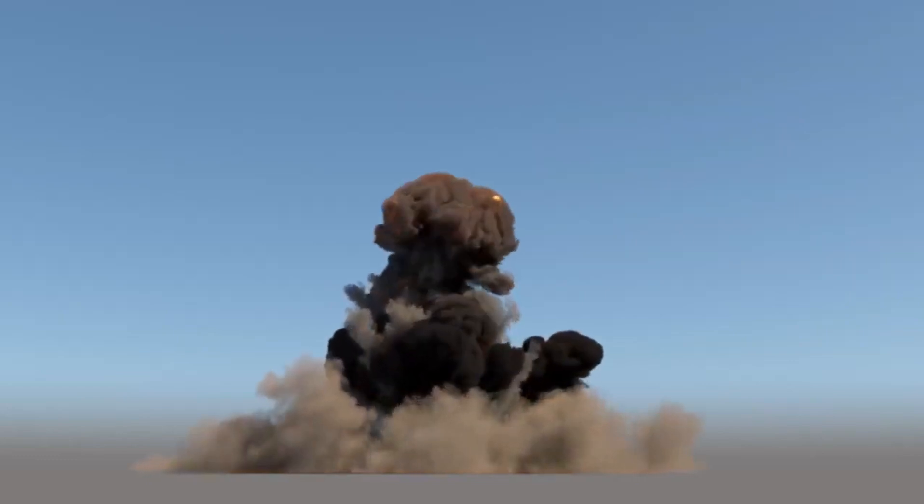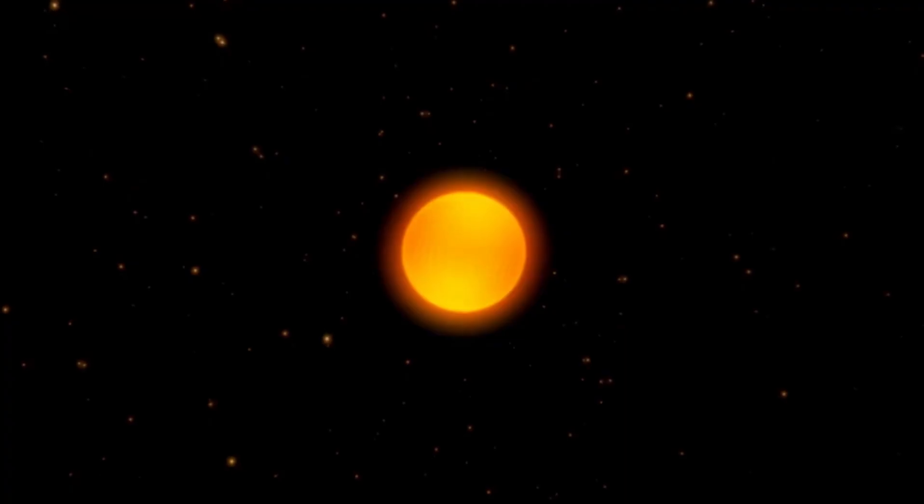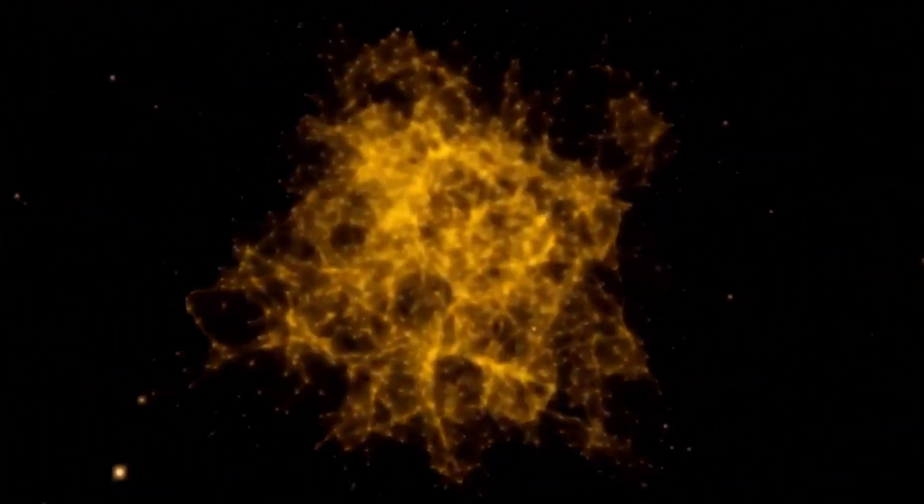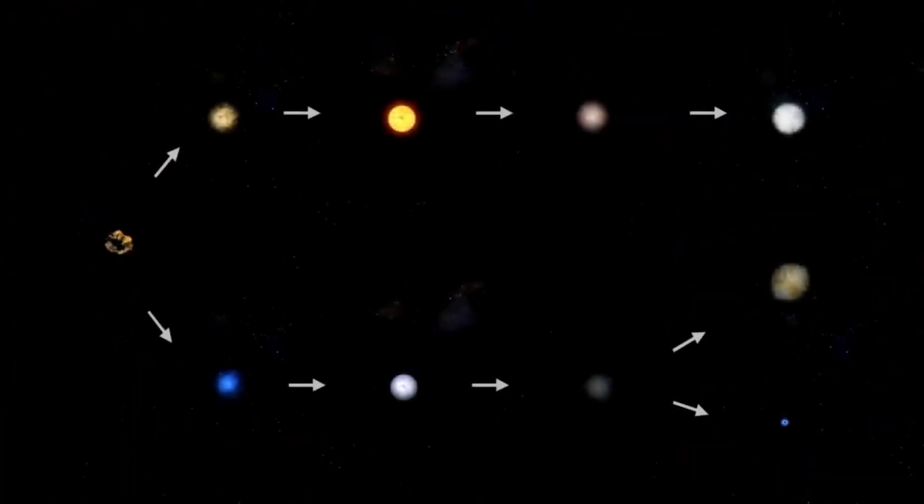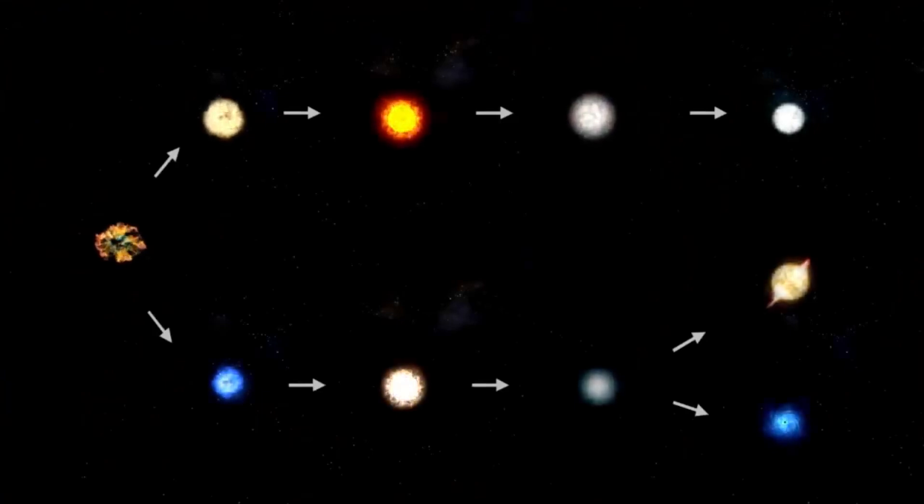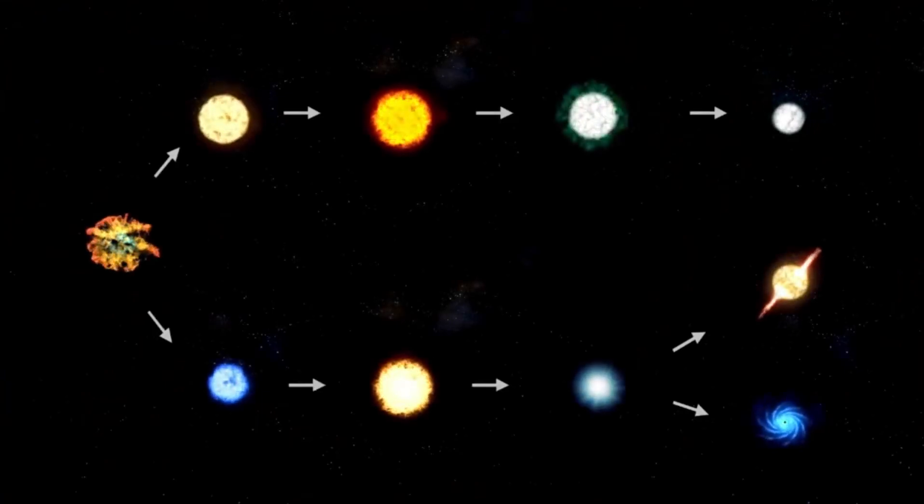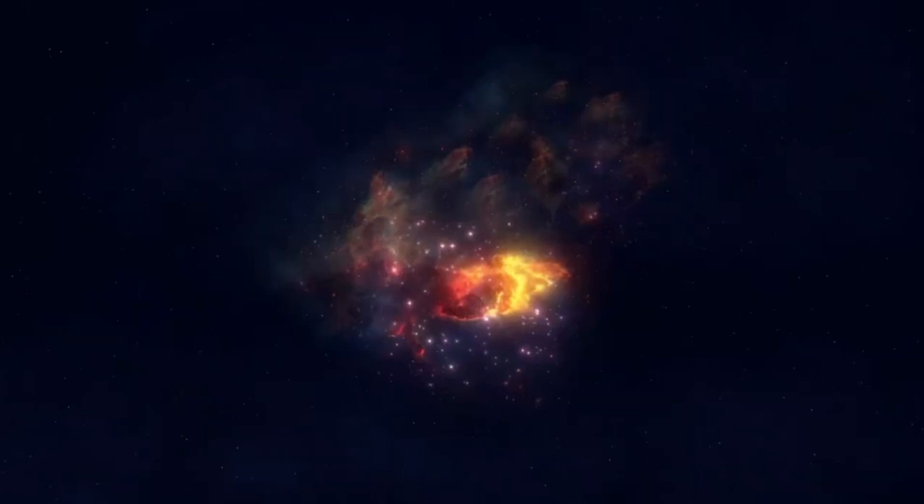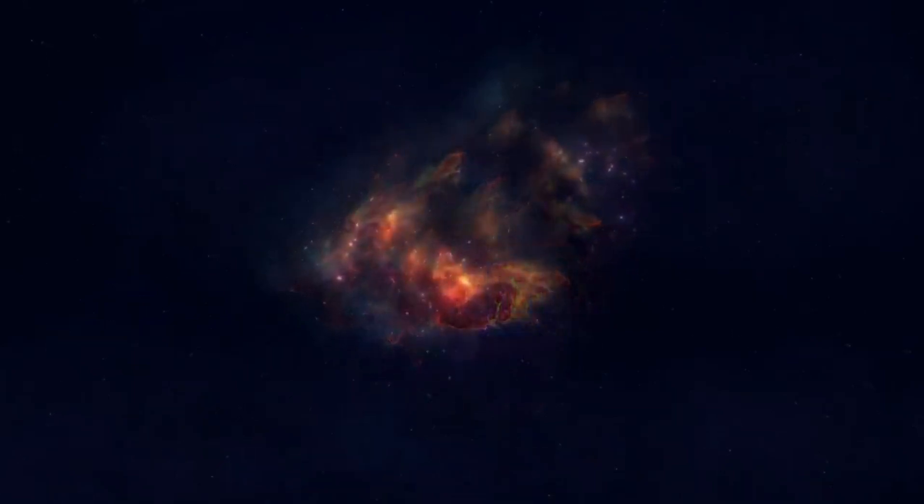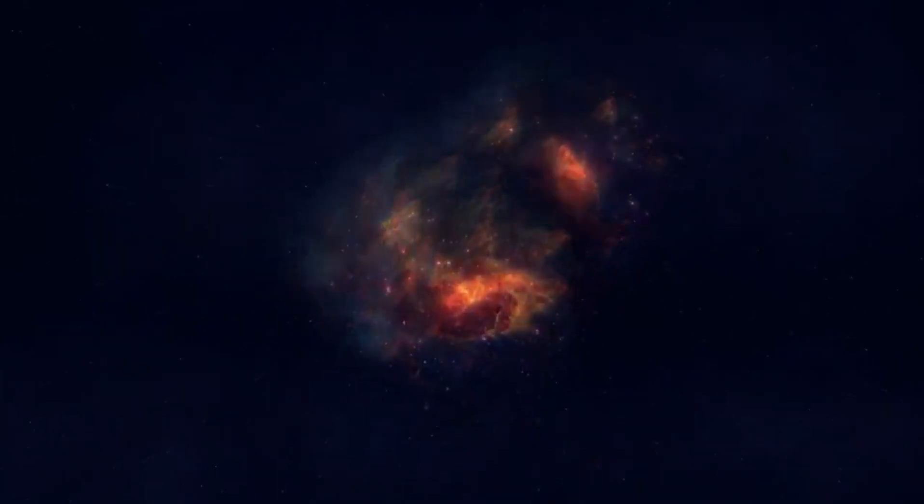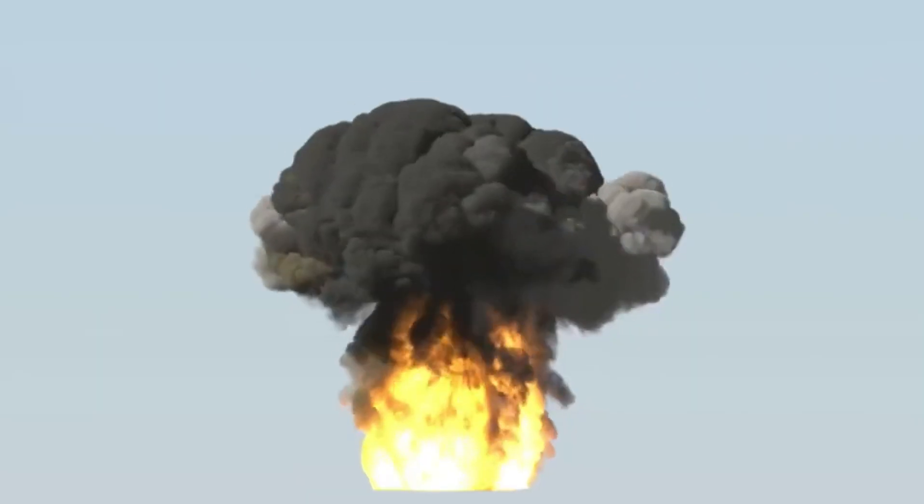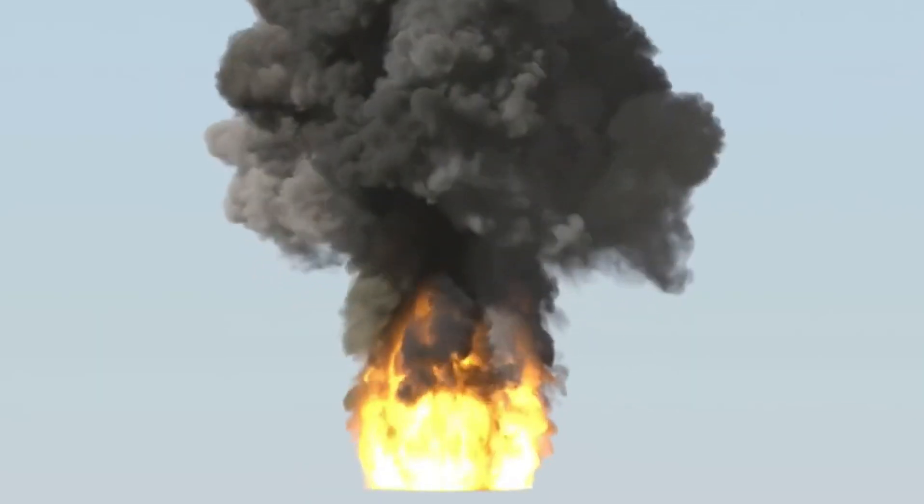Betelgeuse is classified as a semi-regular variable star, meaning it experiences multiple cycles of fluctuating brightness due to variations in its size and temperature. This red supergiant is known to exhibit two main periods of light pulsation. The first period lasts 400 days and is believed to be caused by pulsations in the fundamental mode. The second period is a longer cycle of approximately 5.6 years, and its origin remains unknown.